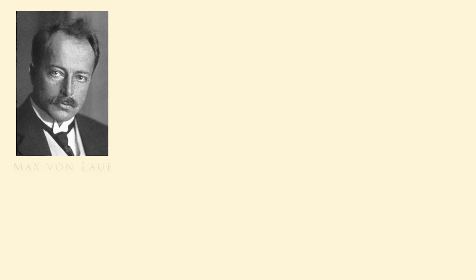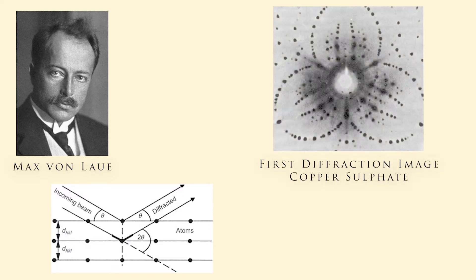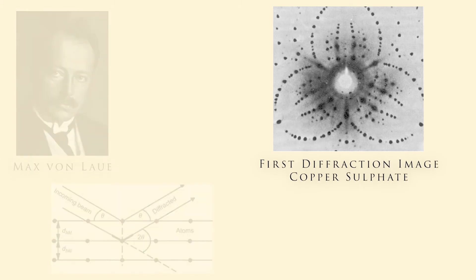However, it was not until 1912 until the exact nature of X-rays was understood. In 1912, X-ray diffraction was discovered by Max von Lau. He found that crystalline substances act as a diffraction grating in three dimensions for X-rays, with wavelengths comparable to the spacing of the crystallographic planes in the lattice.